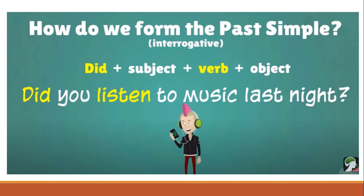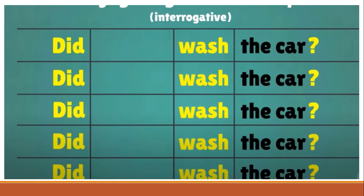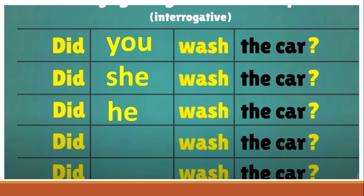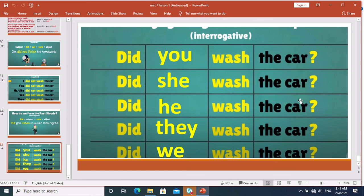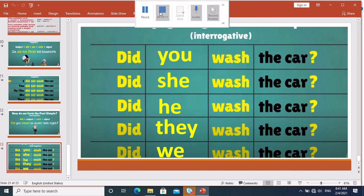To form a question in the past simple, start with 'did', then the subject, then the verb in the infinitive. For example: Did you listen to music last night? In negatives use 'didn't', in questions use 'did', and always put the verb in the infinitive. Did you wash the car? Did she wash the car? Did he wash the car? Did they wash the car? Did we wash the car? Thank you so much, my dear students. I hope you understand our lesson. See you next time. Goodbye.